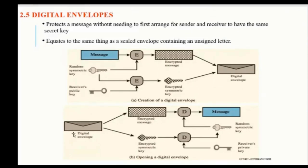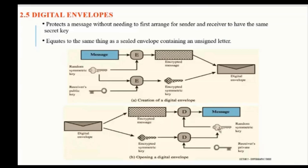The receiver gets two things: the encrypted message and the encrypted symmetric key — both are encrypted. To decrypt the message, you need the symmetric key. This key was encrypted using the receiver's public key, so the receiver uses their private key to decrypt it.